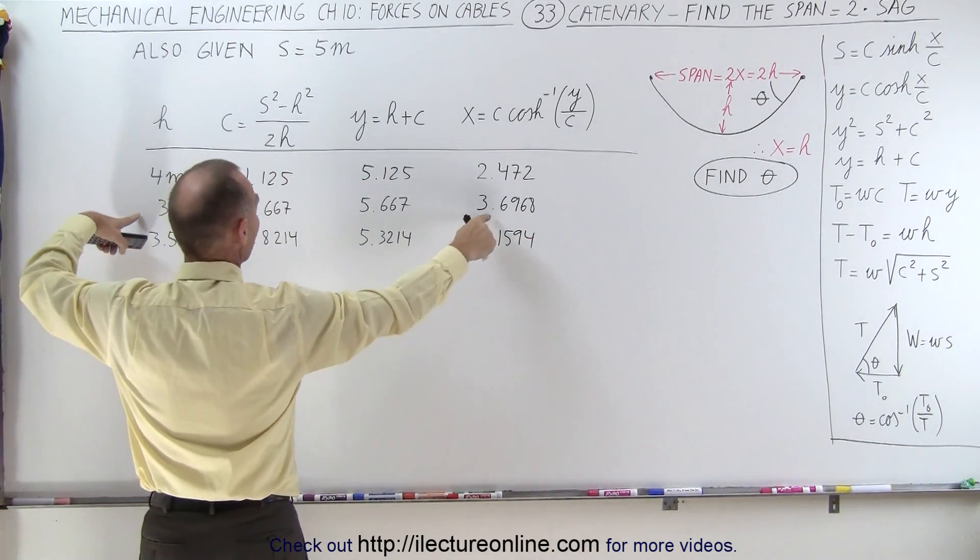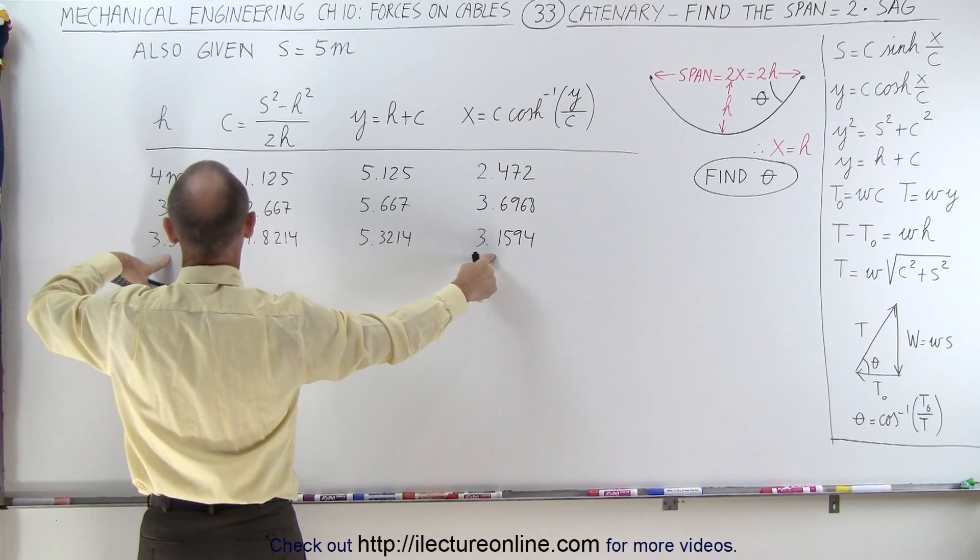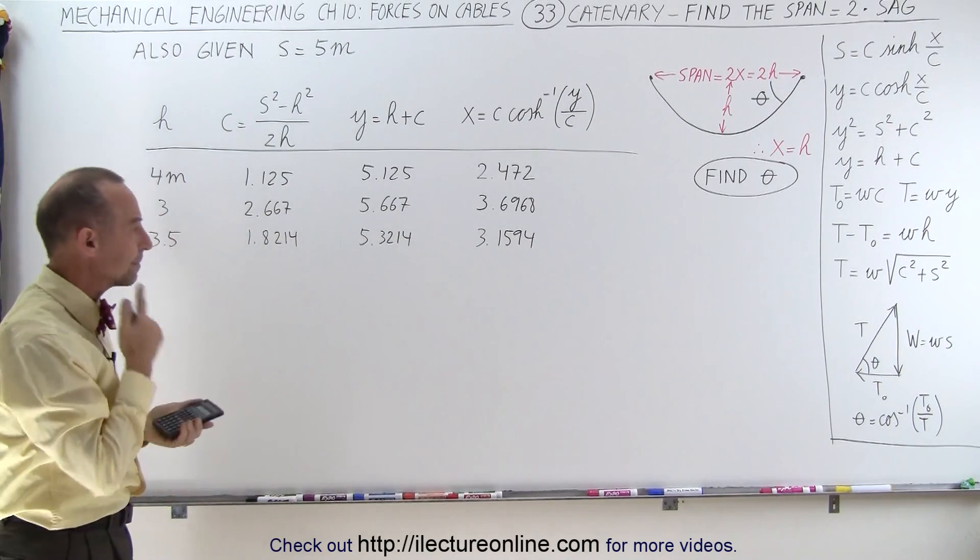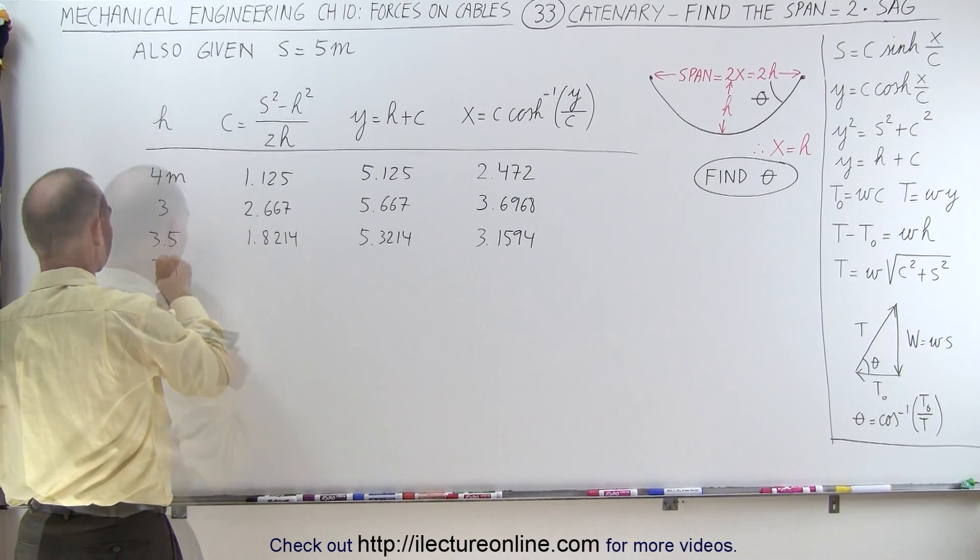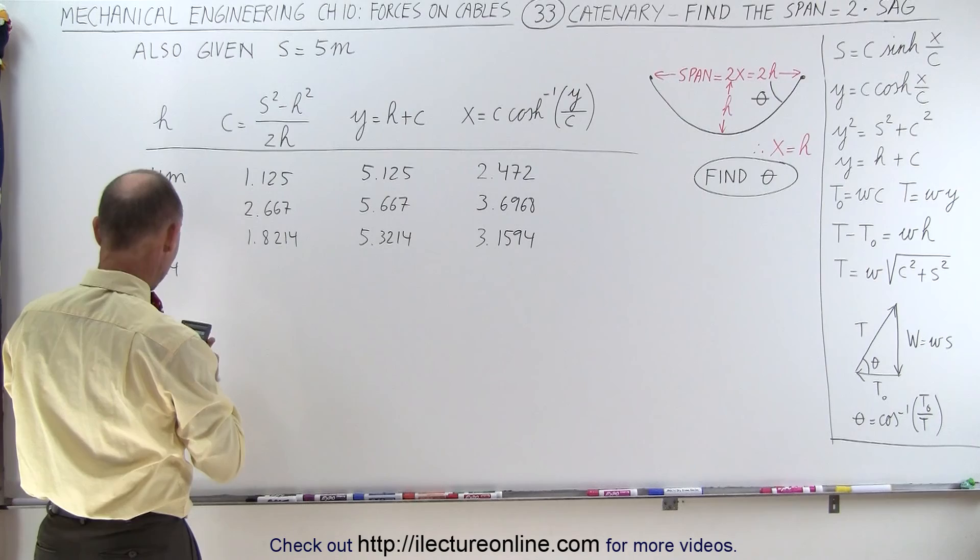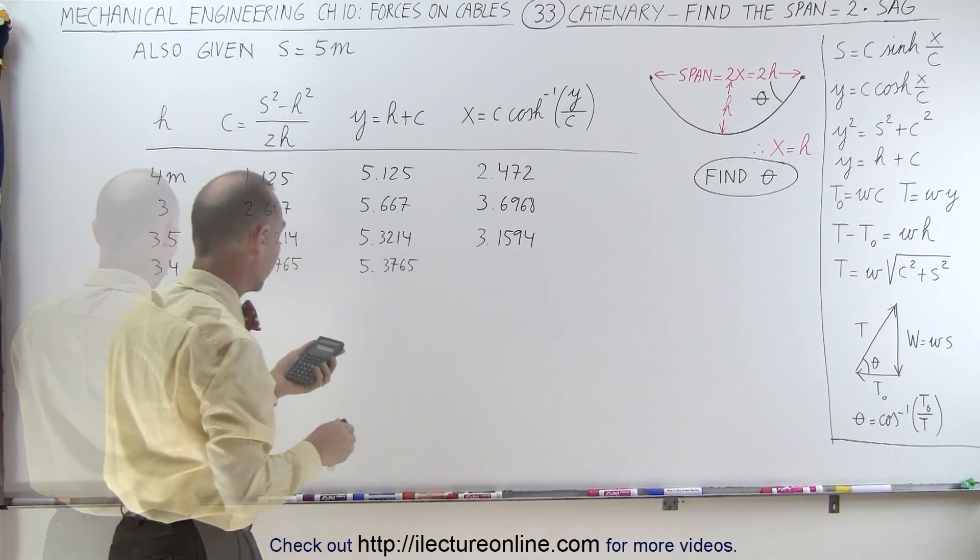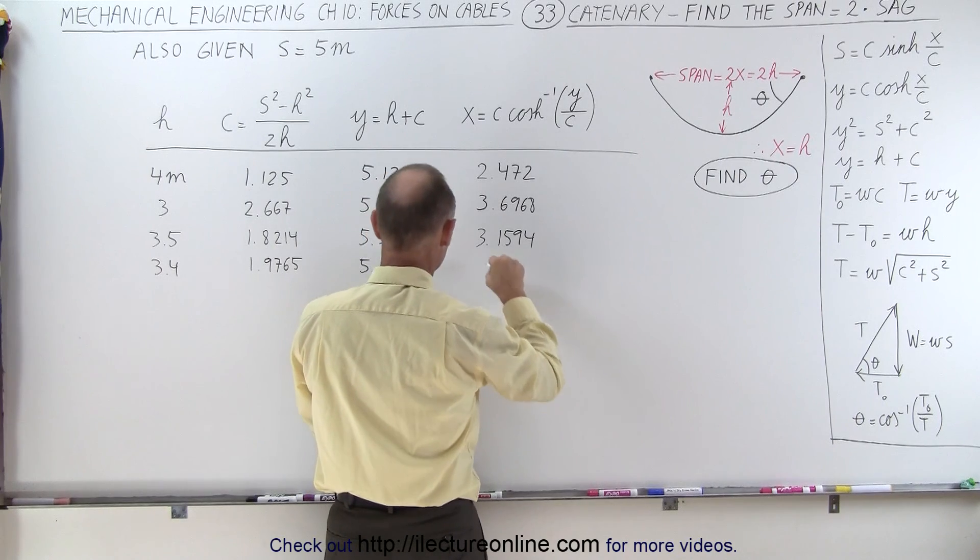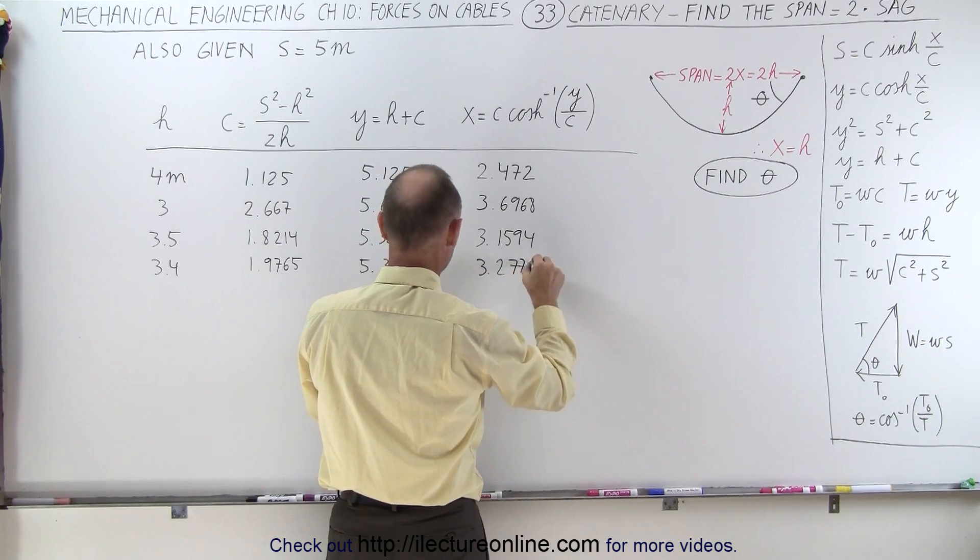Here this was bigger, now we're smaller. So I need to get closer to 3. Let's try 3.4. 25 minus 3.4 squared. Let's hope we're getting close now. 3.2775.